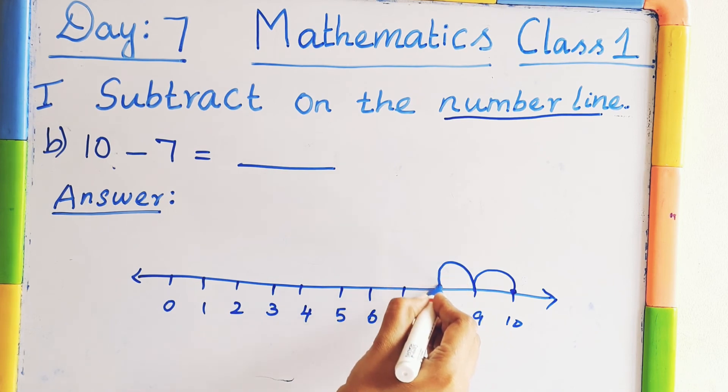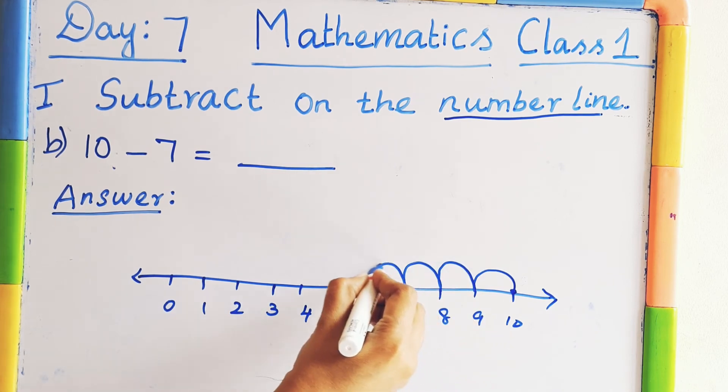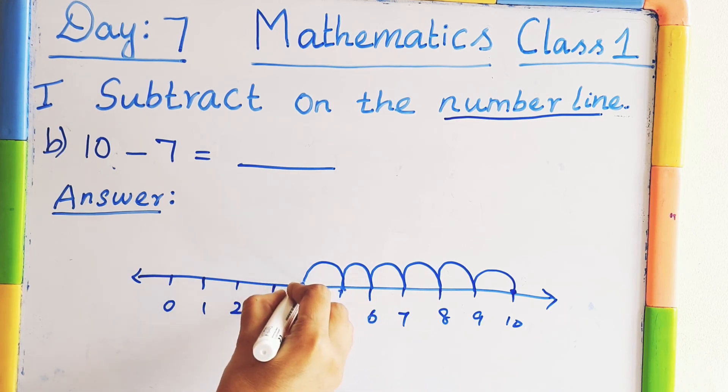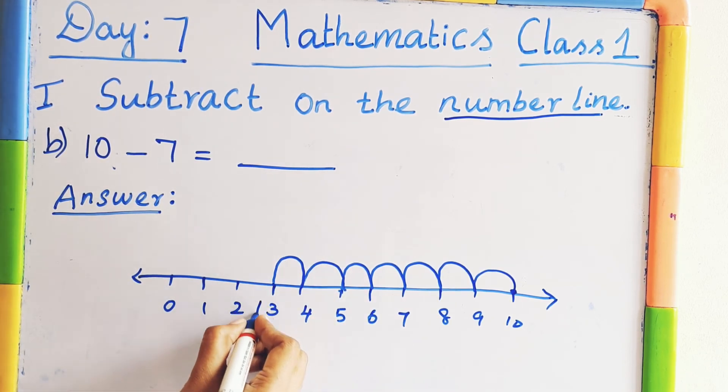[Counting:] 1 curve, 2 curve, 3, 4, 5, 6, 7. Where we reached? 3. So the answer is 3.